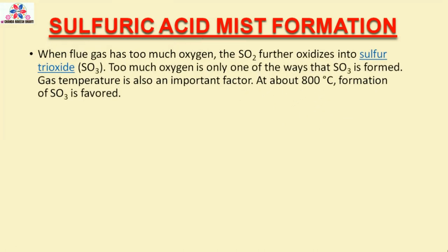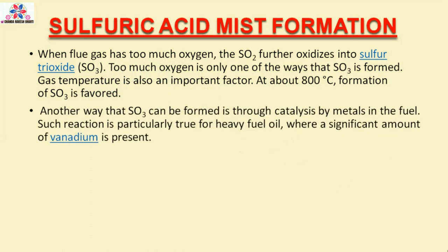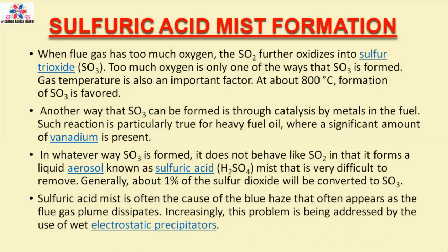When flue gas has too much oxygen, the SO2 further oxidizes into sulfur trioxide (SO3). Too much oxygen is only one of the ways that SO3 is formed. Gas temperature is also an important factor; at about 800 degrees Celsius, formation of SO3 is favored. Another way that SO3 can be formed is through catalysis by metals in the fuel. Such reaction is particularly true for heavy fuel oil, where a significant amount of vanadium is present. In whatever way SO3 is formed, it does not behave like SO2 in that it forms a liquid aerosol known as sulfuric acid mist that is very difficult to remove.